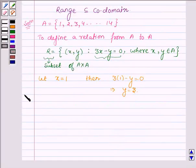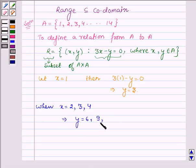Similarly, when X equals 2, 3 and 4, this implies Y equals 6, 9 and 12 since our relation Y equals 3X.